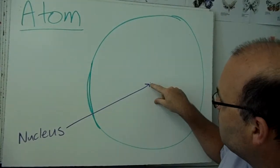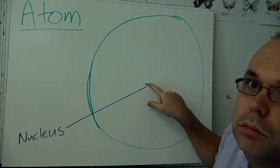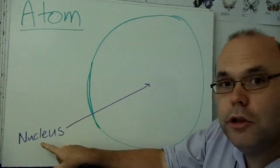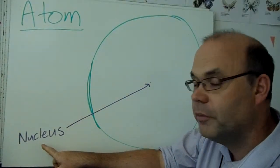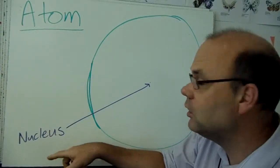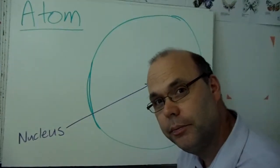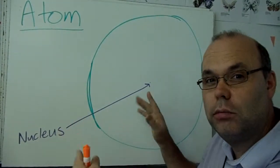Now you'll see at the middle there's a teeny, tiny little dot. That's called the nucleus. And actually the nucleus is a lot smaller than that if this was drawn to scale, like a map.